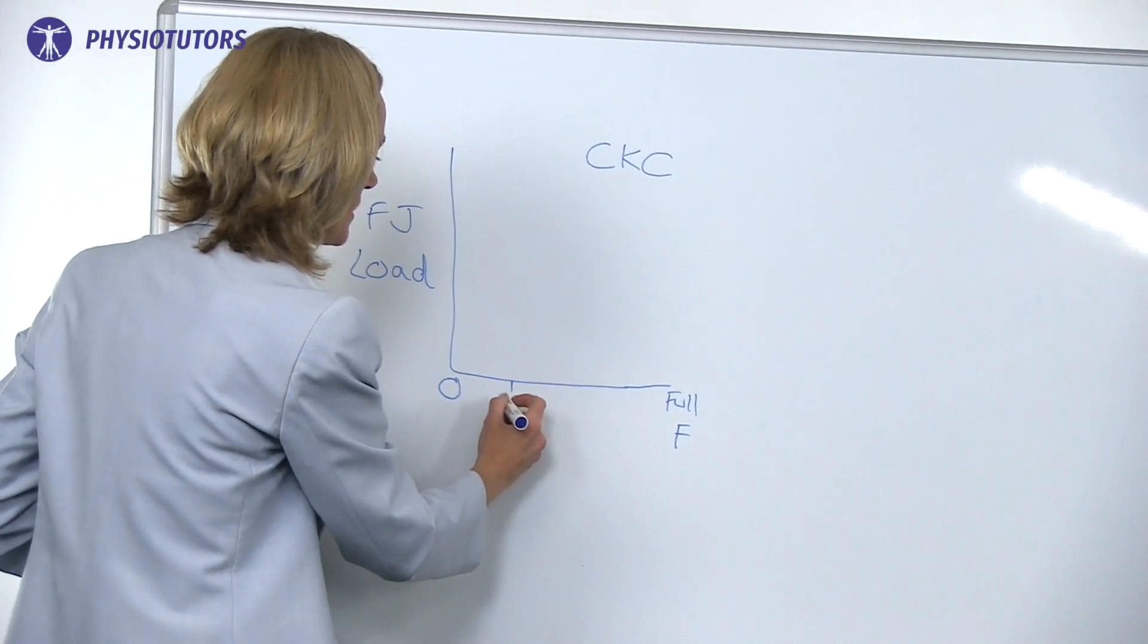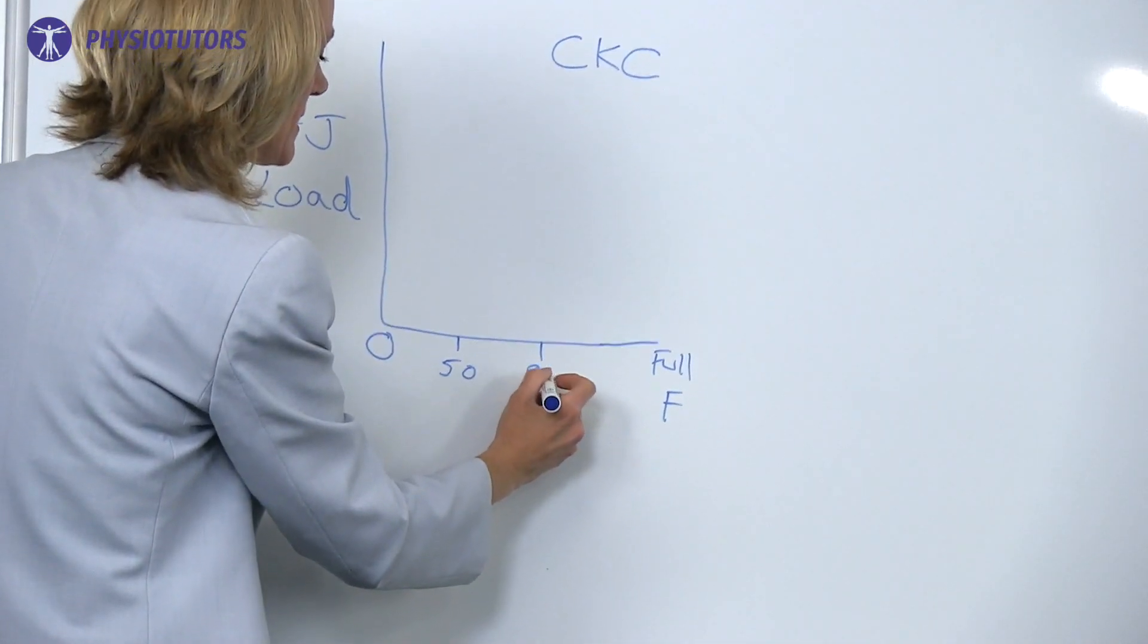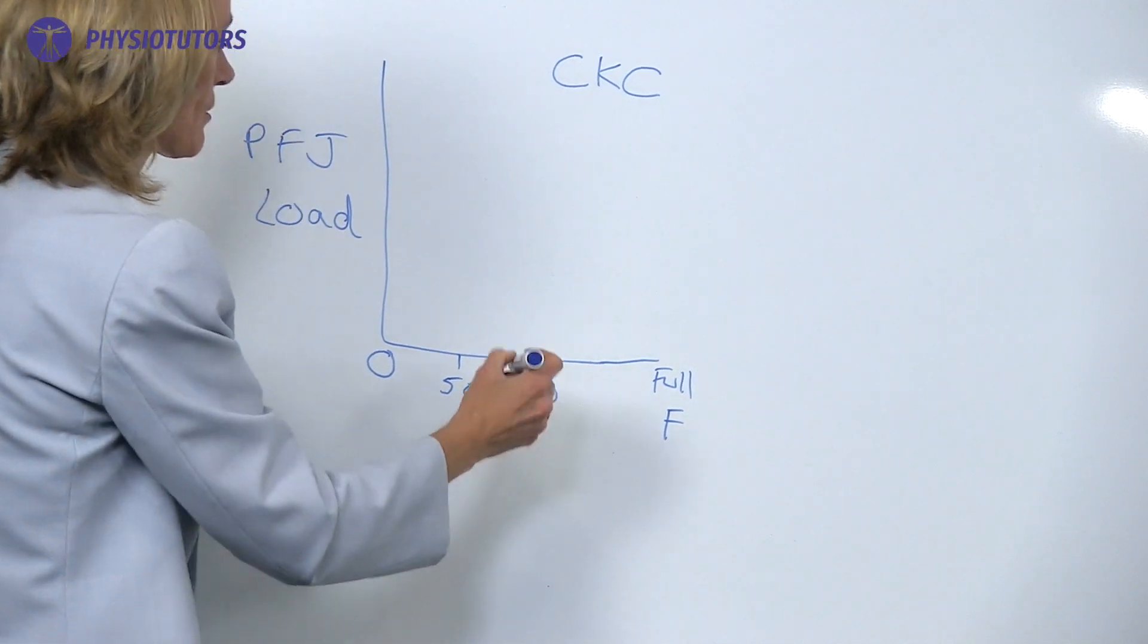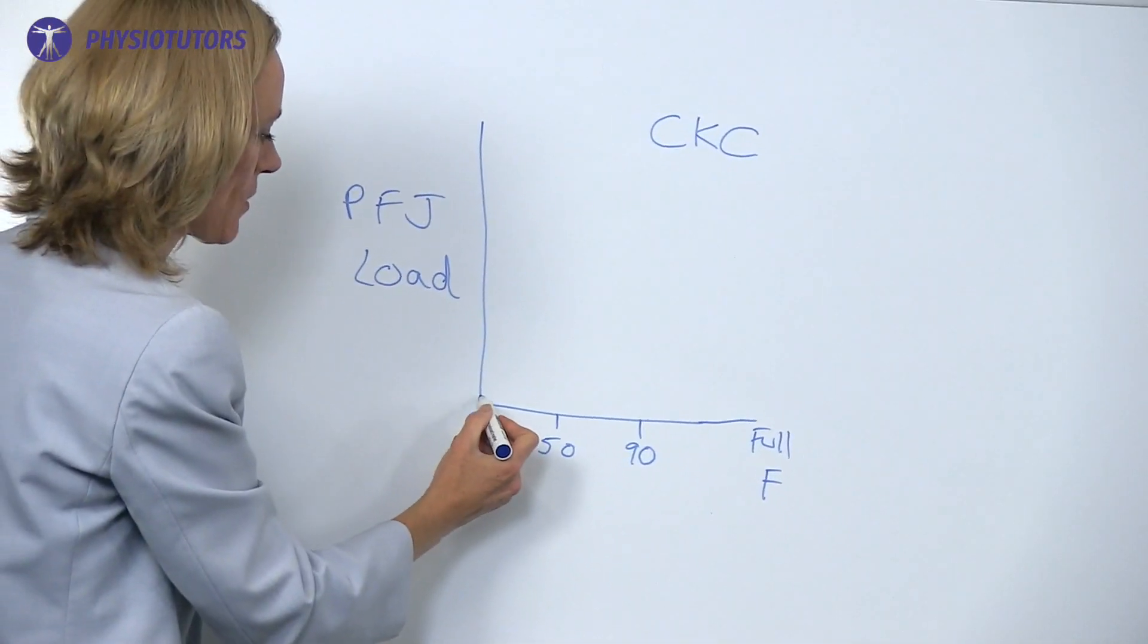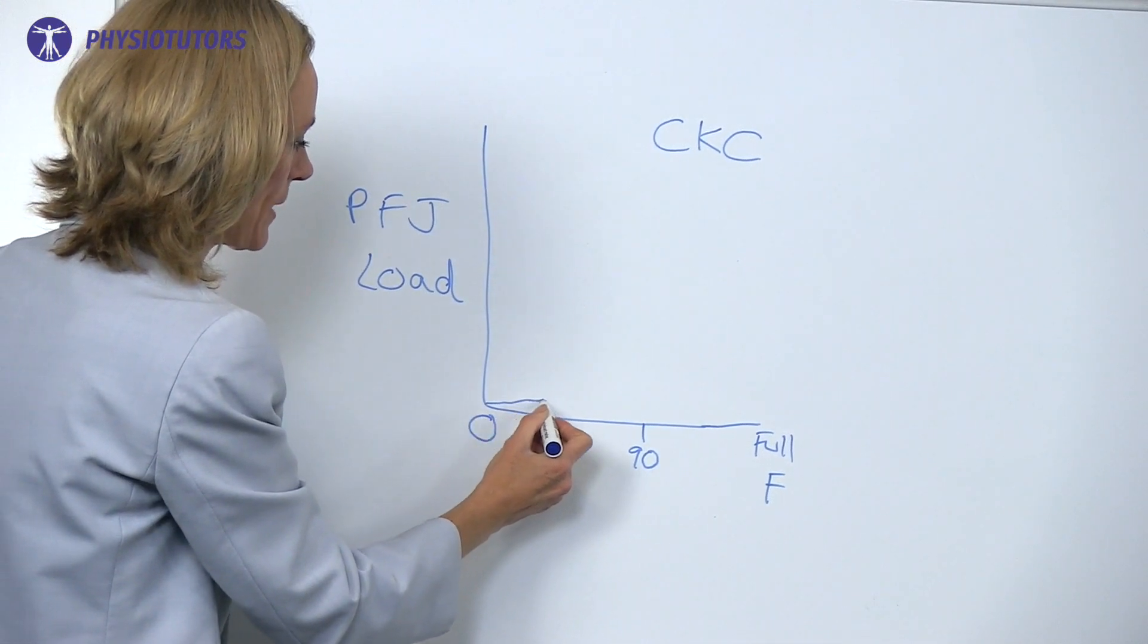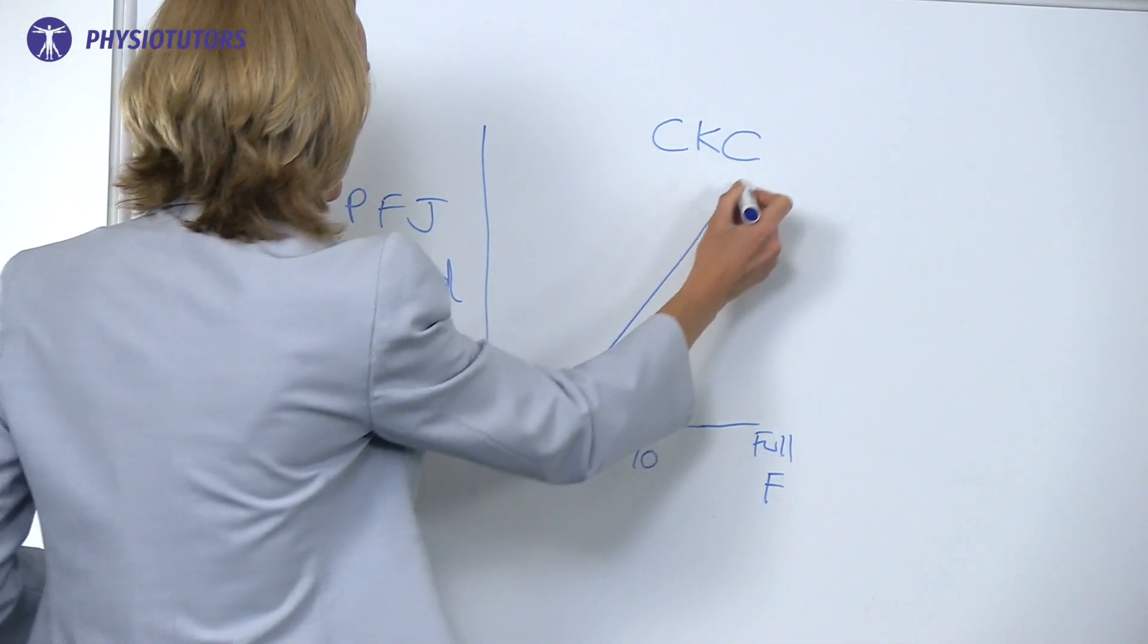So if we draw in 50 degrees and 90 degrees, the graph doesn't do that. What it does is it goes along really quite low level, and then when it gets to 50 degrees it escalates.